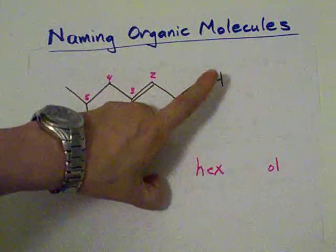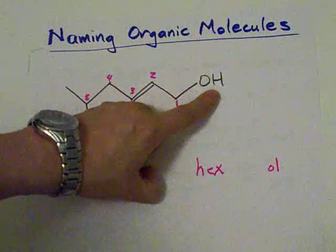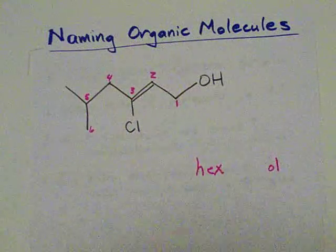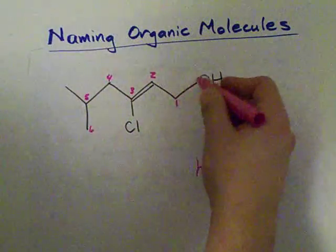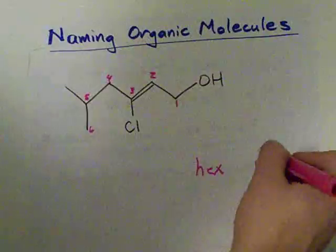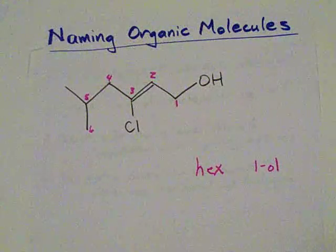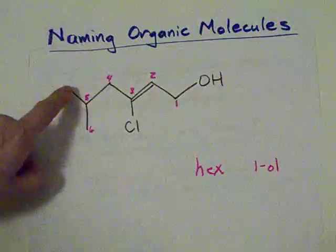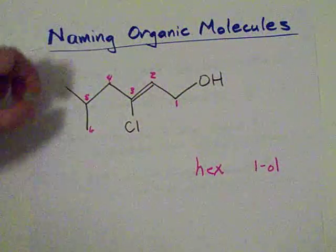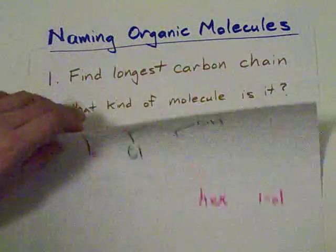Now, alcohols can actually be anywhere on a molecule, so you're going to have to tell people where the alcohol is. In this case, it's attached to carbon number one, so it's actually going to be a 1-ol. If that alcohol was over here, it would have been a 3-ol or something.